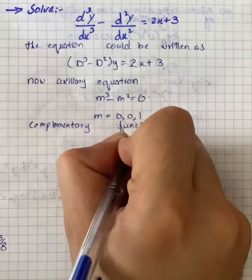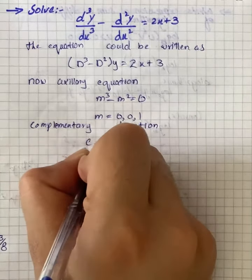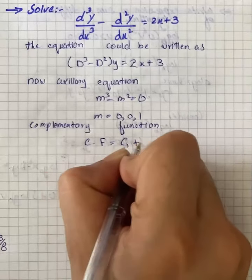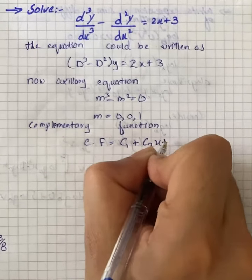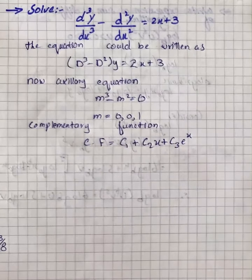The complementary function is equal to c₁ + c₂x + c₃e^x. Now we need to find the particular integral.